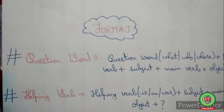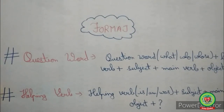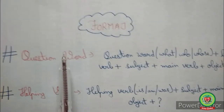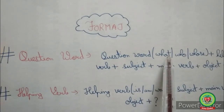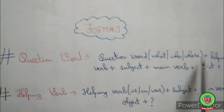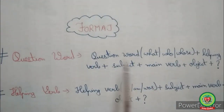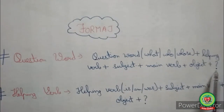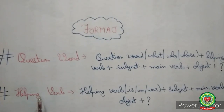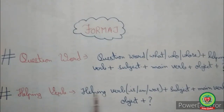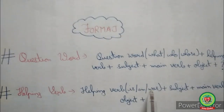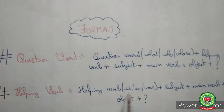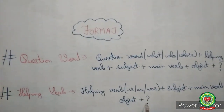Students, you have to remember the format while changing an assertive sentence into an interrogative. When the sentence begins with a question word, the format is: question word (what, who, whose, etc.) + helping verb + subject + main verb + object + question mark. When the sentence begins with a helping verb, the format is: helping verb (is, am, can, could, etc.) + subject + main verb + object + question mark.